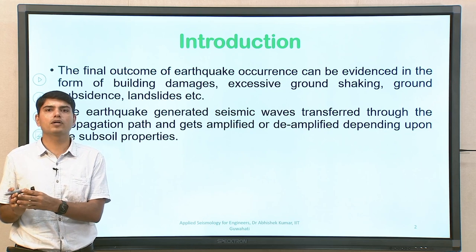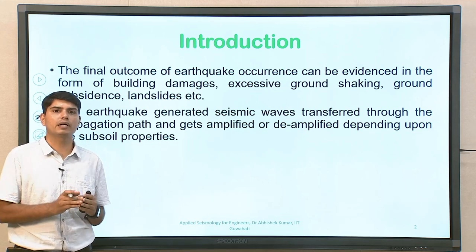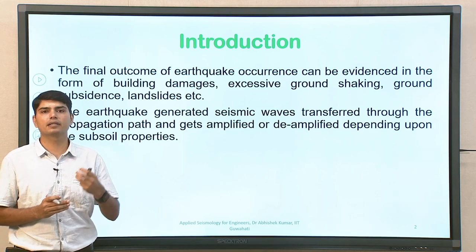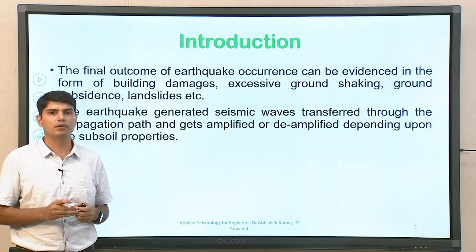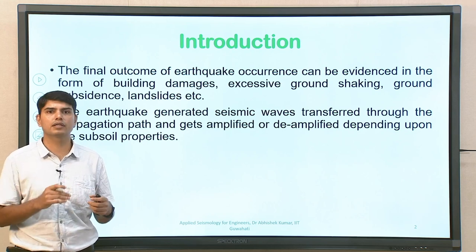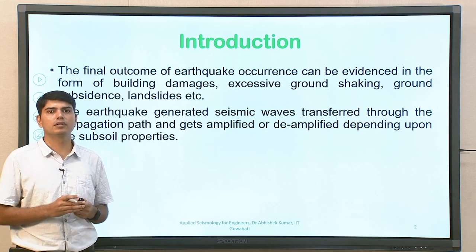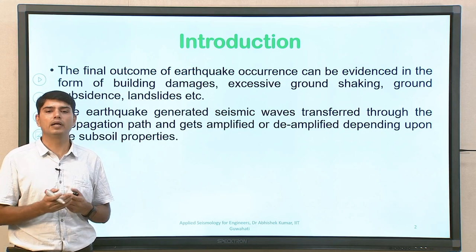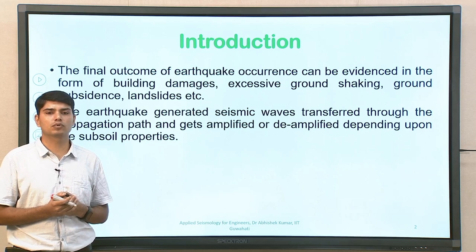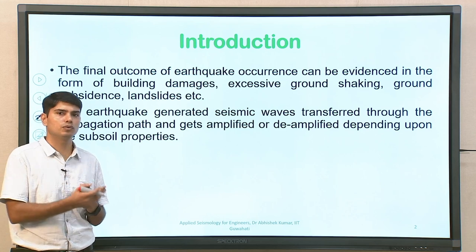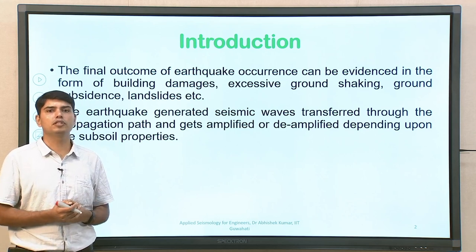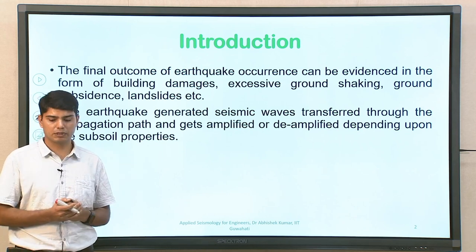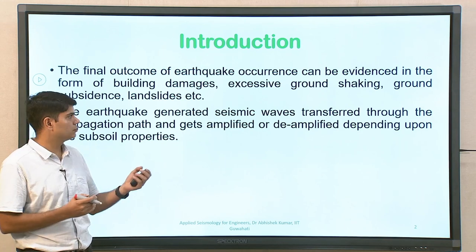One part is recording of ground motion characteristics at the observation point. The second part is the actual scenario created because of earthquake and its interaction with the system — it can be ground, building, or any other superstructure. We witness damages to buildings and casualties. Damages include building damages, excessive ground shaking, and landslides in hilly terrain. In ocean regions there can be tsunamis. There can also be ground subsidence, minor to major, and depending on the amount witnessed at the site, one can assess if it is within tolerable limits.